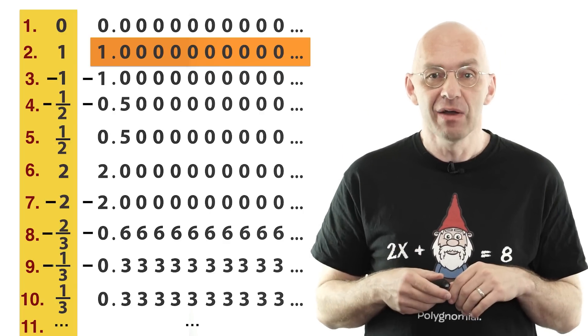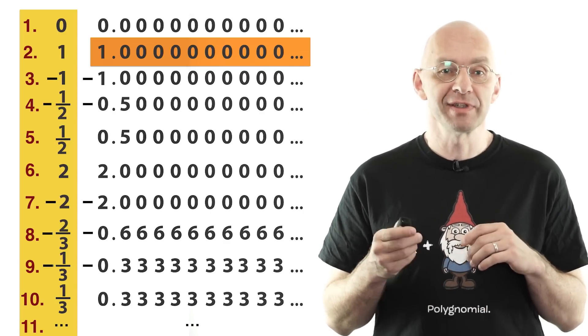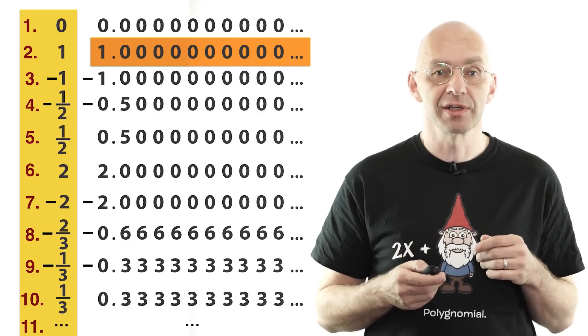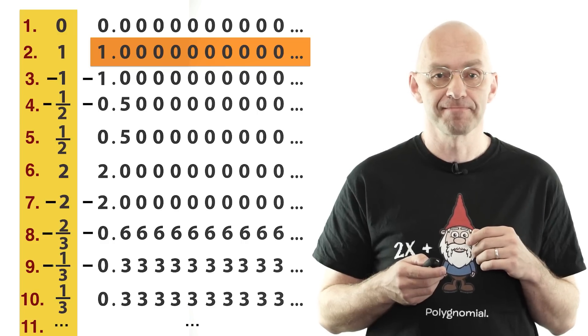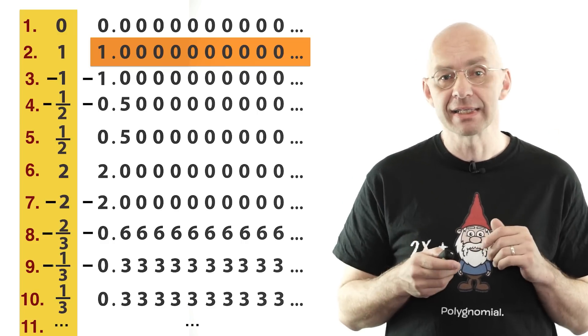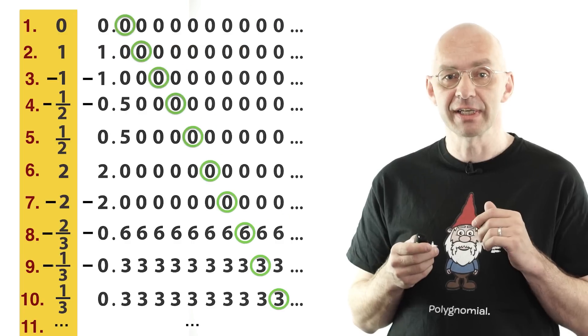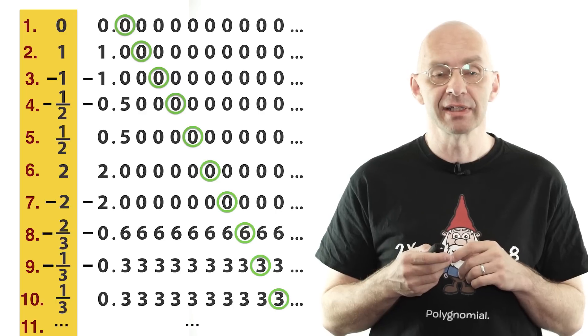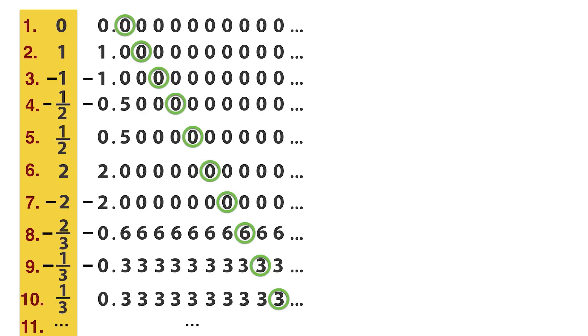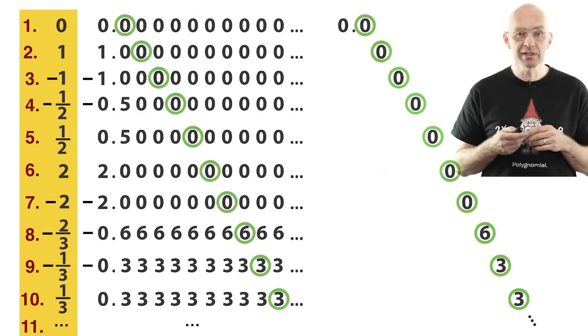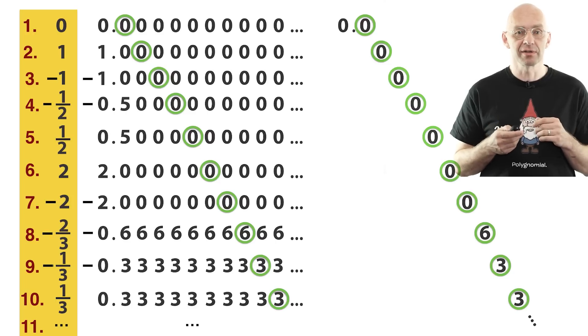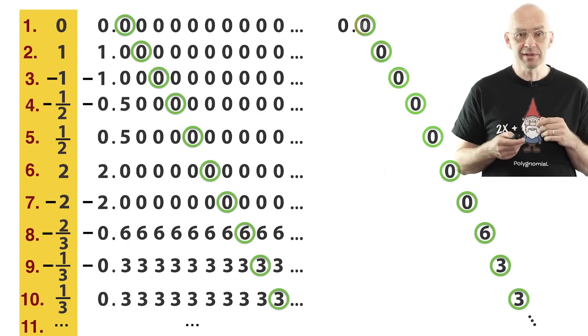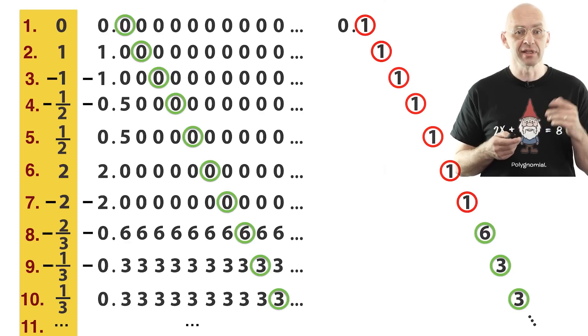Anyway, whenever there is a choice between two different decimal expansions for one of the numbers on our list, we'll use the decimal expansion that terminates in zeros. Now highlight this infinite diagonal of digits here. Using this diagonal, we can straightaway write down a number that is irrational. So we'll make a copy of the diagonal for this and change all the digits in the circles.